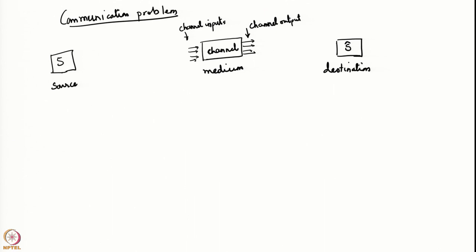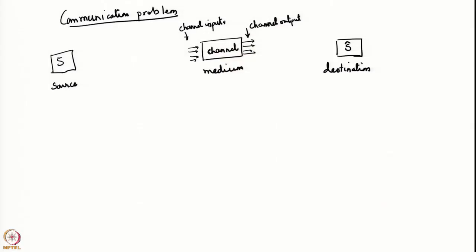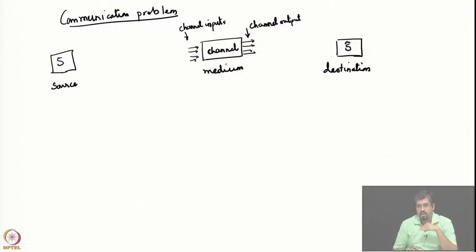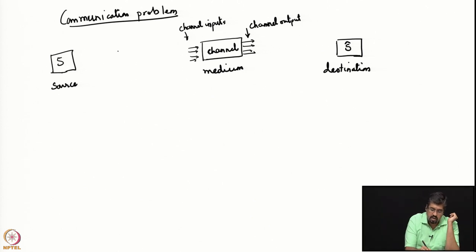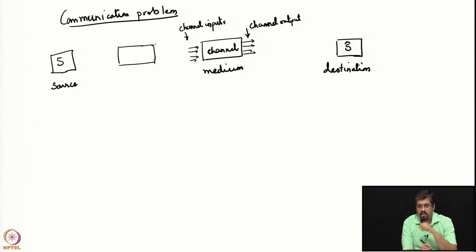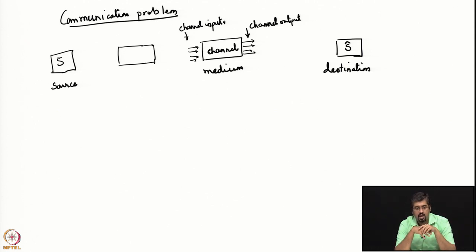If there is a mismatch between the space of the source and the space of channel inputs, then how does one even use this channel to communicate? What one needs is an adapter — a way for this source to talk to that medium, and for that medium to then talk to the final destination. In communication language, this particular thing is known as an encoder.